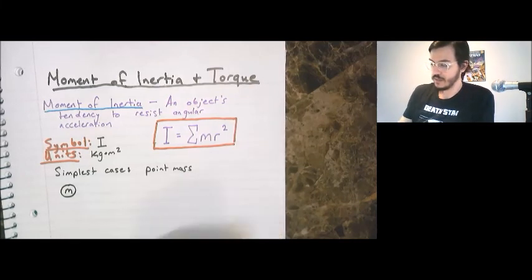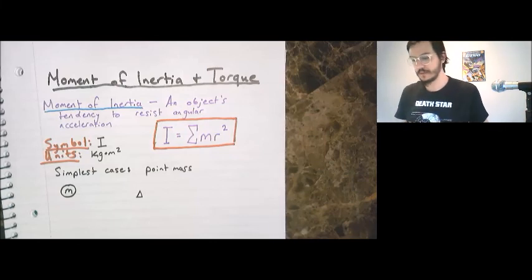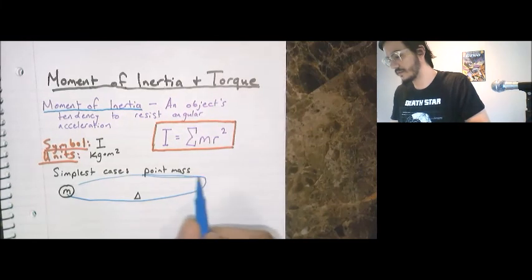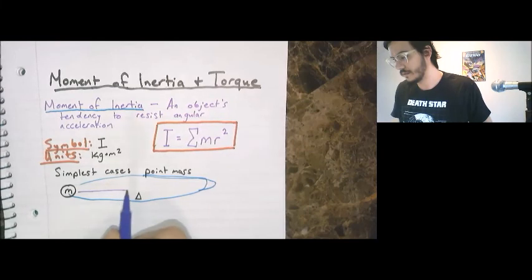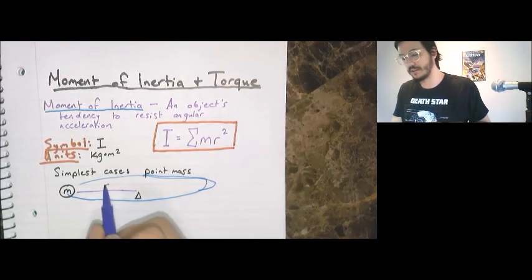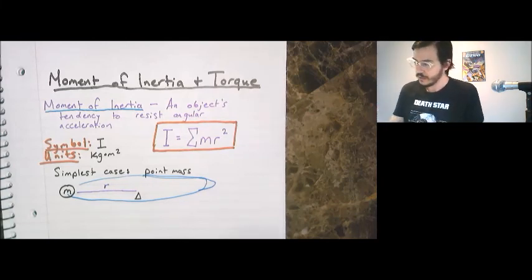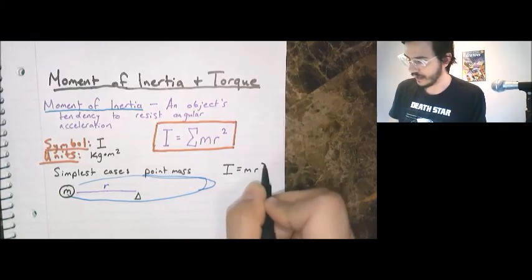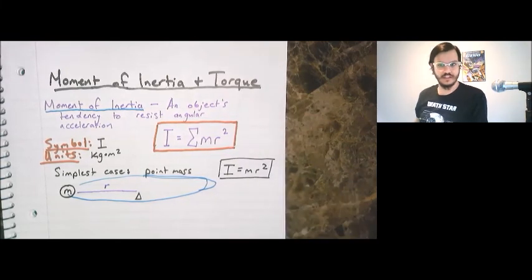So the simplest case would be that of a point mass. What does that look like? Well, you would have an object with a mass that we treat as a point because we're only worried about its center of mass. And it could be going around some axis over here. As this point mass goes in this circle round and round, we have one point mass, one radial distance. Therefore, when we sum it up, we don't have anything to add it to. So for a point mass, your moment of inertia is just mass radius squared. Nice and easy.